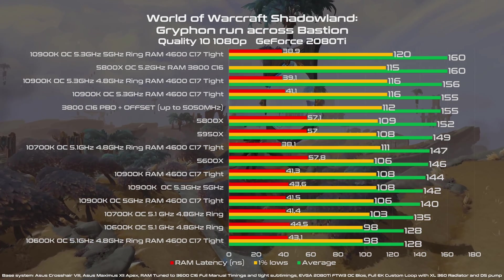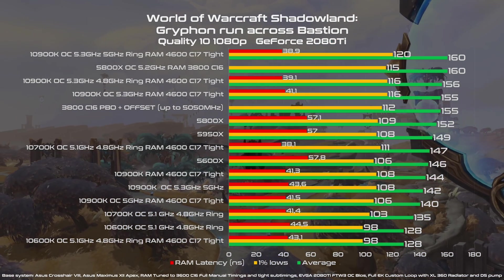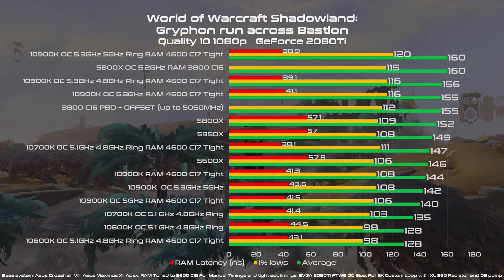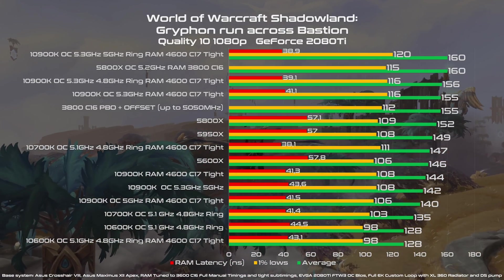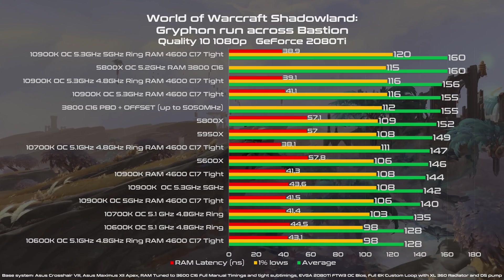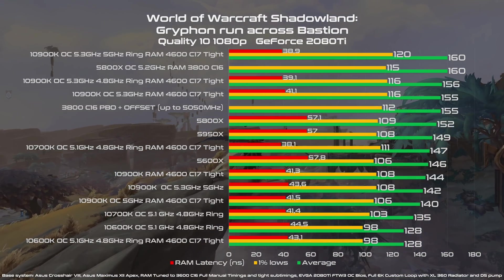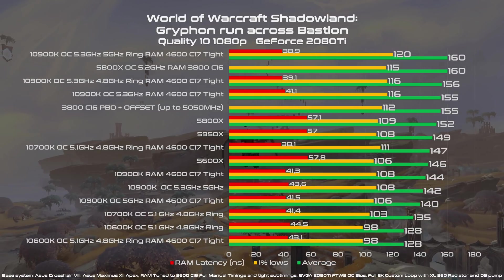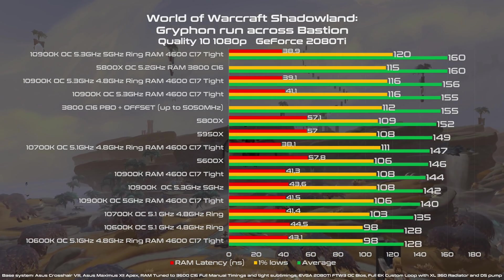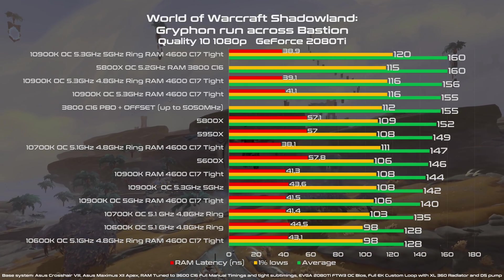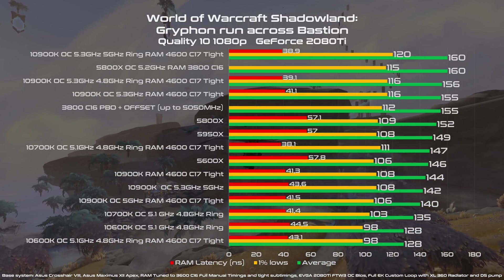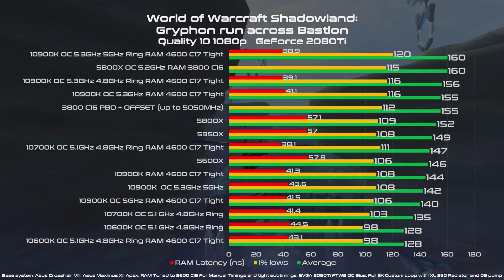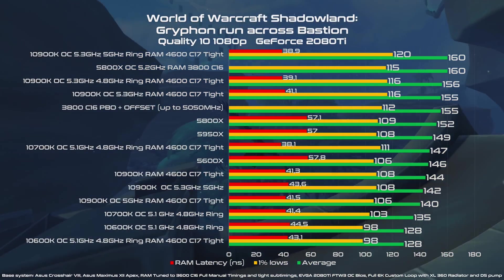Now, overclocking. If you want the absolute best, the king is still the i9-10900K — but in this case it requires a very lucky silicon and very expensive memory, and then you have to tune that memory and make sure the system is stable. So it takes a lot of work to achieve an average of 160 FPS. I achieved that same average with the Ryzen 7 5800X overclocked to 5.2GHz with the best possible memory configuration, but to do that I used extreme overclocking cooling with liquid nitrogen — so it's not a real-world scenario.